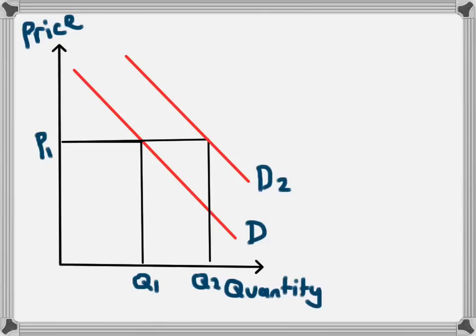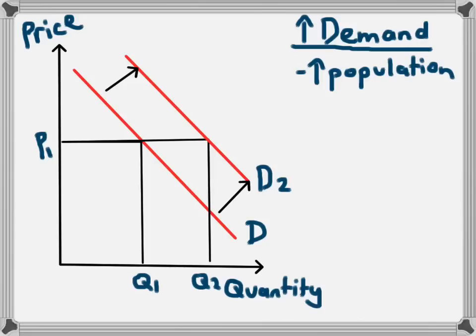So an increase in the population is an example of a factor that will cause the demand curve to increase from D1 to D2. There are many things that could cause this increase in demand. We've just seen one of those things is an increase in population. Another example could be an increase in income. If people's incomes are higher they will demand more of that product at the same price because they have more money to spend.